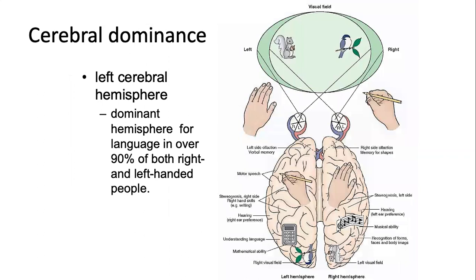In most patients, the left cerebral hemisphere is the dominant hemisphere for language, whether you're right-handed or left-handed. Some people say left-handed people are usually creative in music and the arts, but this is not always the case — there are also right-handed people who are musically inclined and artistic.